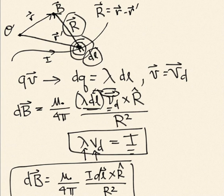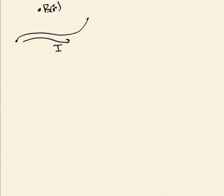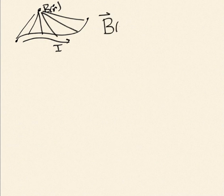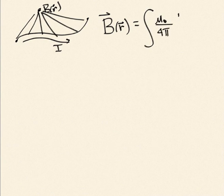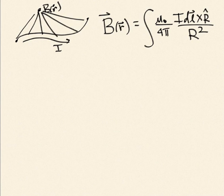To get the total magnetic field due to the entire wire, I integrate all contributions along the wire: B(R) = ∫ μ₀/4π × I dL × R̂ / R². The limits of the integral are set by how much of the wire I want to include. I'll work through examples in the next video, and there will be examples in discussion as well.